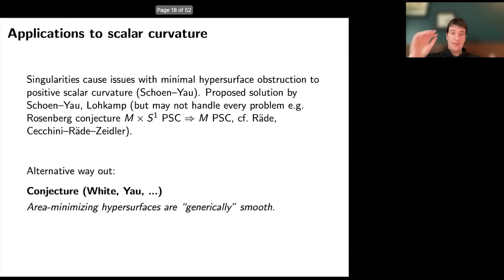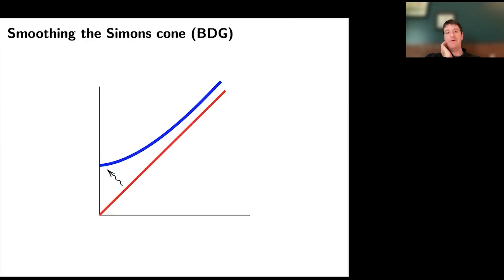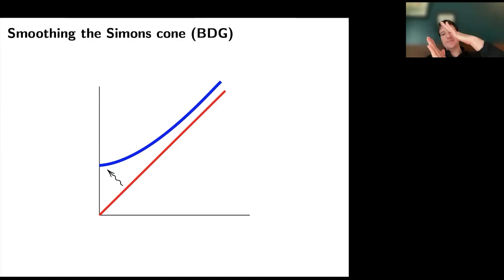What I want to talk about today is the alternative way out: the minimal surface generic regularity conjecture. This says that area-minimizing hypersurfaces should be generically smooth. Bombieri, De Giorgi, and Giusti showed that if you take the Simons cone there's actually a completely smooth area-minimizing hypersurface lying to one side of the Simons cone — found by ODE methods. This suggests that at least this special cone can be perturbed to something smooth, giving some hope for the conjecture.